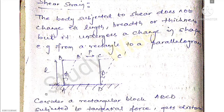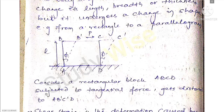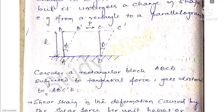Shear strain: a body subjected to shear does not change its length, breadth, or thickness, but it undergoes a change in shape — that is, from a rectangle to a parallelogram. Here is a figure: rectangle ABCD is shown.